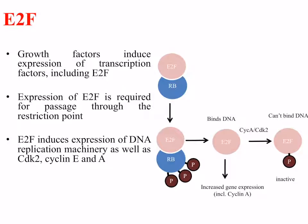Once this has occurred and the process is no longer needed, E2F can be phosphorylated — in particular by the cyclin-dependent kinase complexes that it was responsible for inducing transcription of. When E2F is phosphorylated, it can no longer bind DNA, acting almost like a negative feedback loop. E2F is normally responsible for inducing expression of CDK2, cyclin E, and cyclin A.